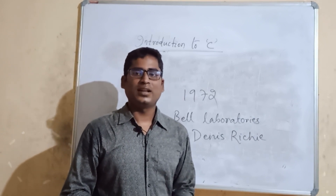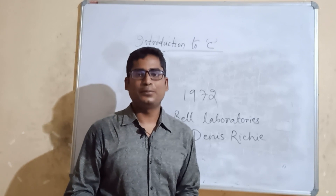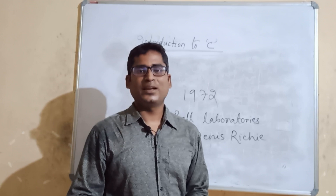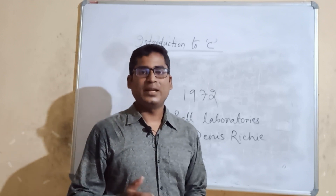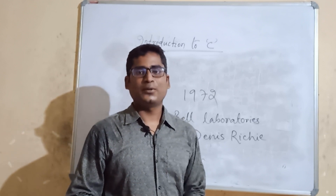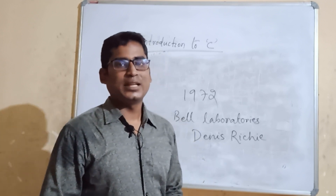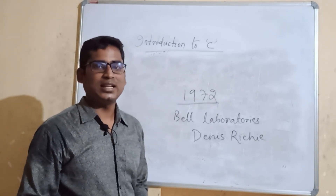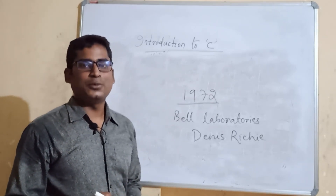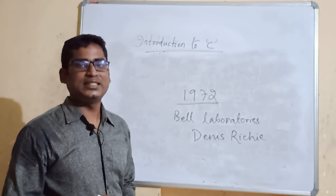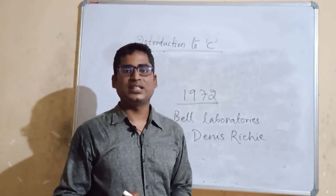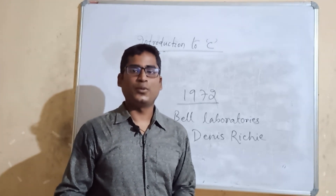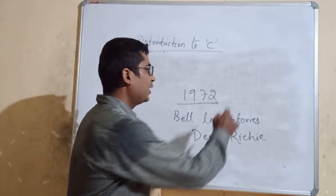Why is this programming language called C? It is called C because of the alphabet sequence — A, B, C. C is not a funny story or a random name. In 1972, Dennis Ritchie developed this programming language and it became known as C. It was very popular at that time.